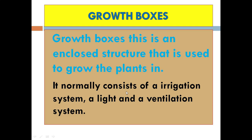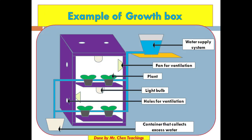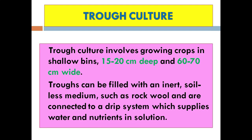Growth boxes: a growth box is an enclosed structure used to grow plants. It normally consists of an irrigation system, a light source, and a ventilation system. The box is fitted with shelves, light bulbs for photosynthesis, holes for ventilation and airflow, containers that collect excess water, a water supply system, and fans for ventilation. It is equipped with all the equipment to provide the right conditions for plants to grow, and can be kept indoors, on your veranda, or in your house.